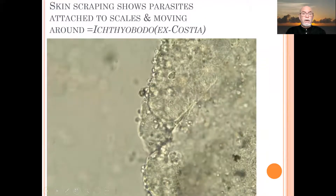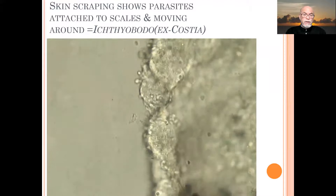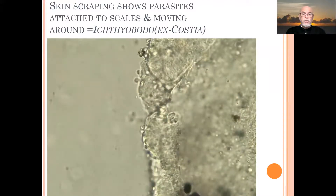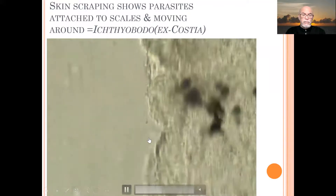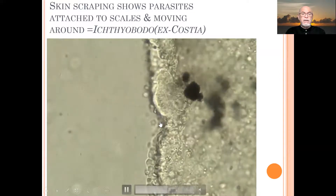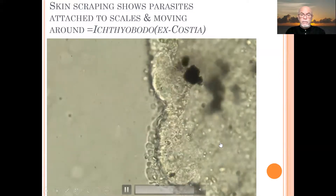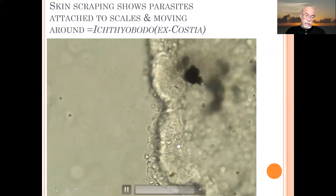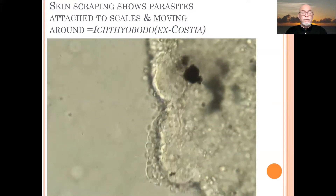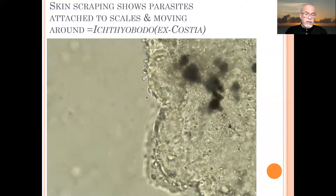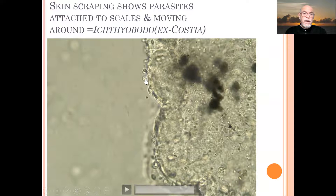Now we take a skin scraping. That's what we see in the microscope. We see all those little tiny parasites attached, and you can see some of them moving around. It's of course easier to recognize when they move. When they're sitting still it's more difficult to see. You can see the little bean-type parasites attached to the scales.